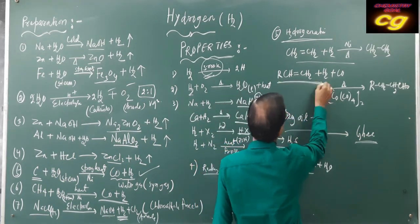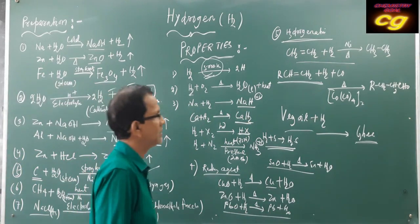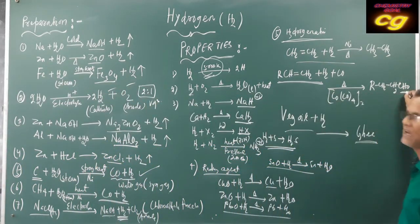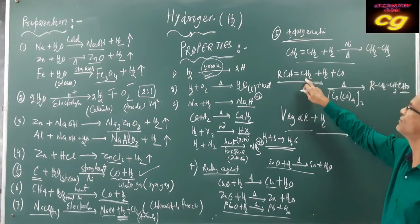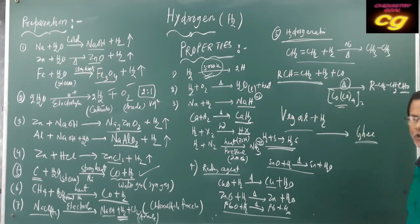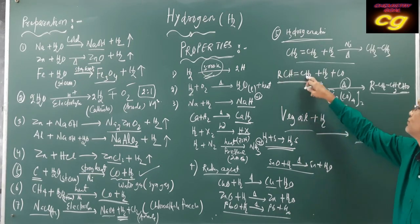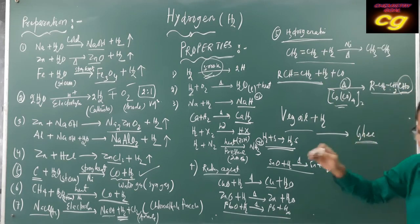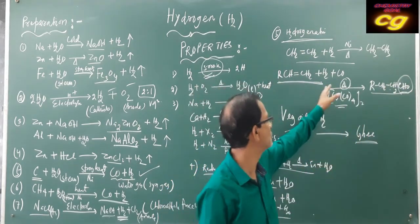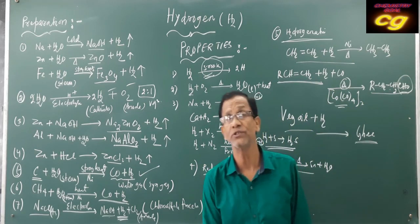Another very important reaction is the hydro-formylation reaction, also called the oxo process. An alkene (R-CH=CH₂) reacts with hydrogen and carbon monoxide in the presence of cobalt carbonyl catalyst on heating; this compound converts to a higher aldehyde. A CHO group is added to the double bond of the unsaturated compound, producing a new aldehyde. This process is called formylation or hydro-formylation.